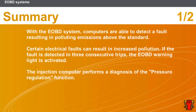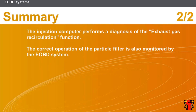In this section, we covered the following points: with the EOBD system, computers are able to detect a fault resulting in polluting emissions above the standard. Certain electrical faults can result in increased pollution; if the fault is detected in three consecutive trips, the EOBD warning light is activated. The injection computer performs a diagnosis of the pressure regulation function and of the exhaust gas recirculation function. The correct operation of the particle filter is also monitored by the EOBD system.